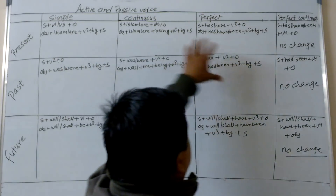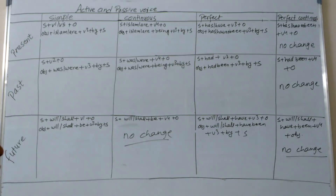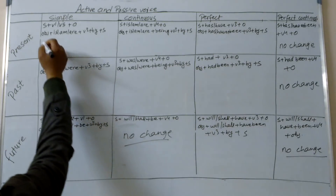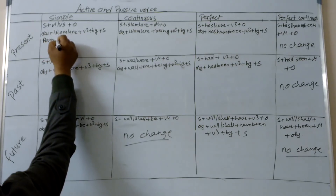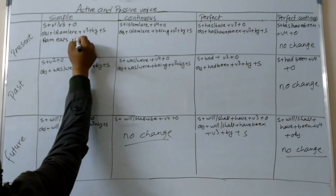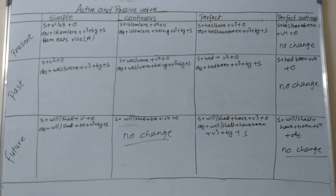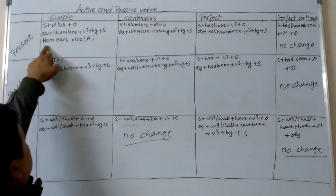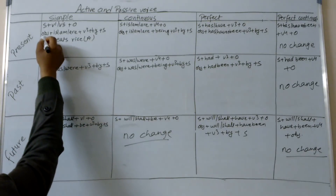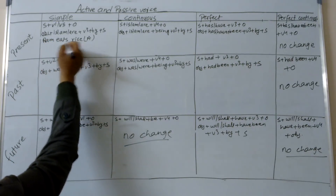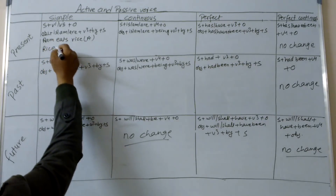That's why only these eight tenses can be changed into the passive voice. For example, Ram eats rice. This is the active voice. Now let's change it to passive voice. This is subject, verb, and object. We have to write the object first. So object is rice. Rice is eaten by Ram — subject.